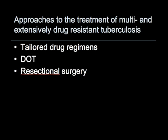Multidrug resistant tuberculosis is defined as tuberculosis caused by isolates that are resistant to at least isoniazid and rifampin. Approaches to the treatment of multidrug resistant and extensively drug resistant tuberculosis include tailored drug regimens, the use of directly observed therapy, and in select cases resectional surgery.